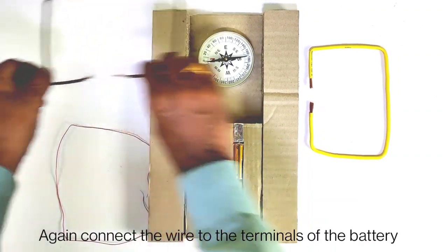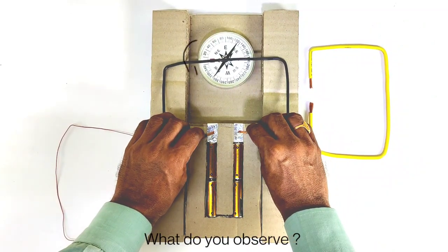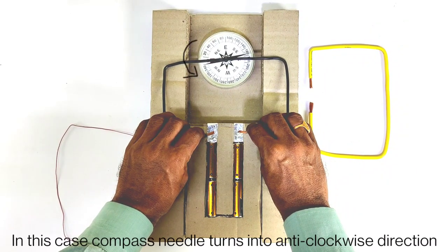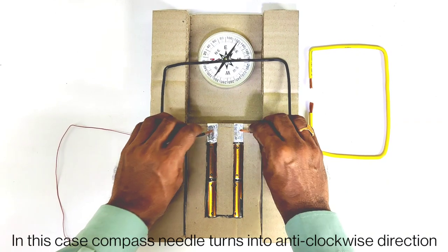Again connect the wire to the terminals of the battery. What do you observe? In this case, compass needle turns into anti-clockwise direction.